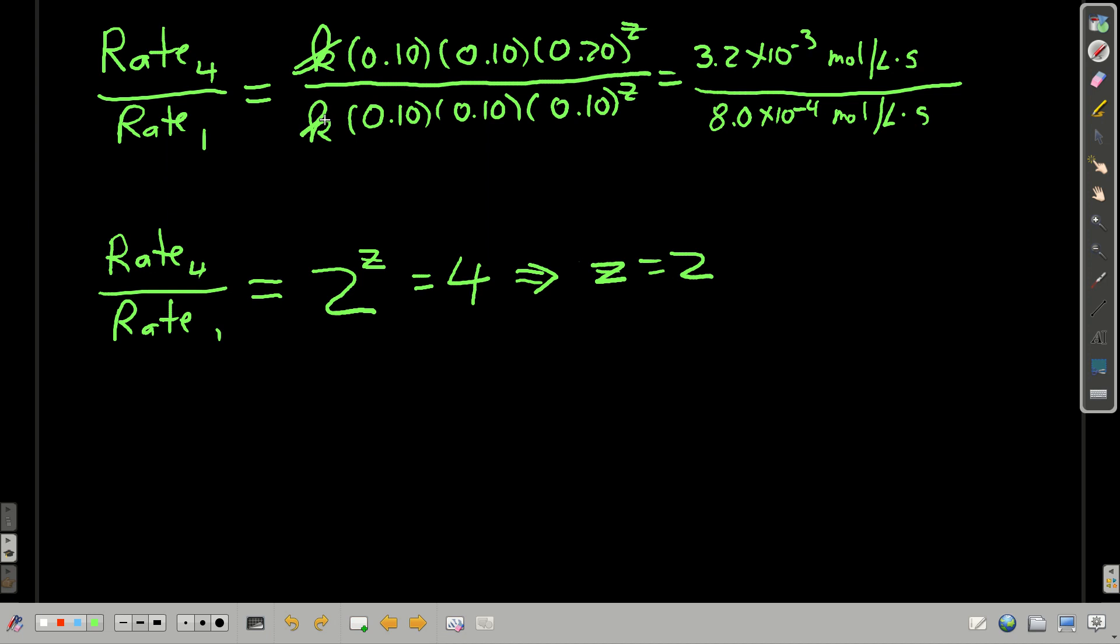So k's cancel. Again, we know the first two exponents, both 1. So we didn't have to put letters there. They cancel here. They cancel here. And these are the initial rates from the experiment, the data in the table. So this over this gives us 2 to the z. Dividing the initial rates, we get 4. Actually, it's 4.0. Solving for z, we get z is equal to 2. Now, we know all three exponents.